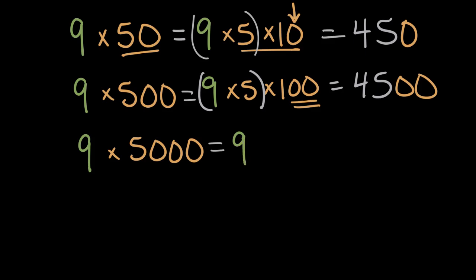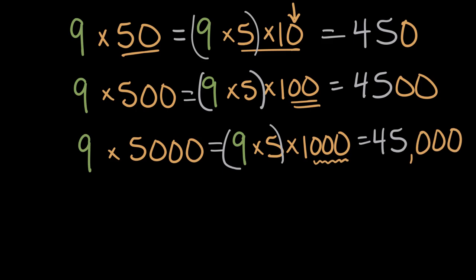nine times 5,000 will be nine times five times 1,000, because 5,000 is five thousands, or a thousand five times. Working across, nine times five, 45. And this time, we add three zeros. So 45,000.